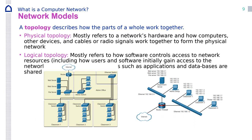The logical topology shows what the IP addresses are, and software controls access to the network, including how users and software initially gain access, such as application databases. One diagram shows you where each computer is, how they are connected, which floor, which room. The other is about the logical — how the software is communicating, what the IP addresses are — and it does not show you where devices are physically located.